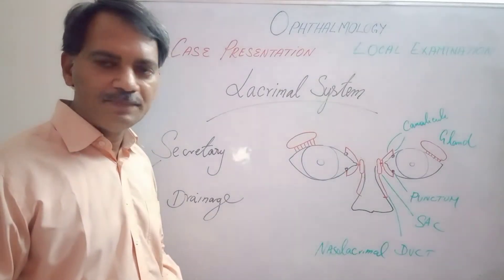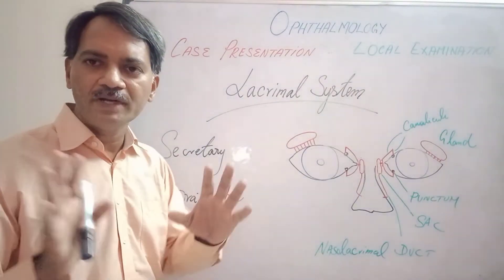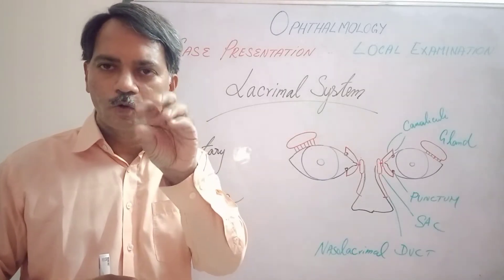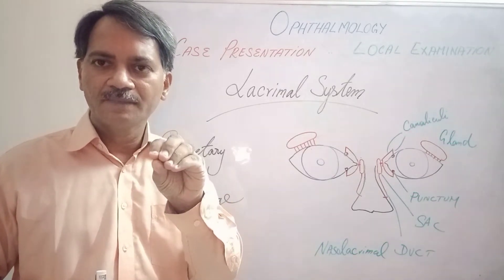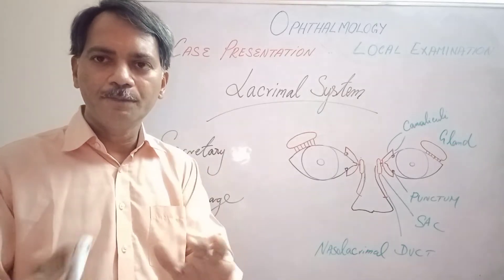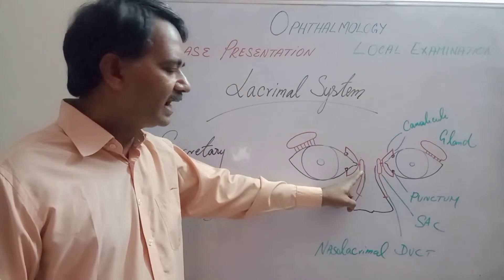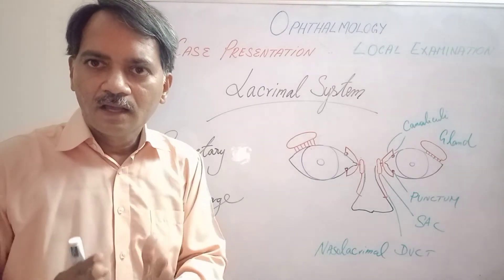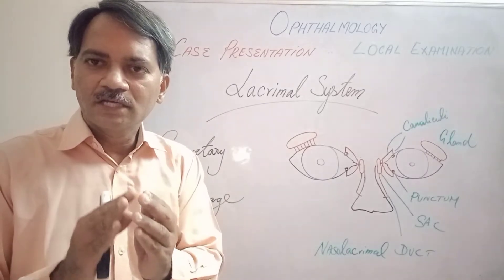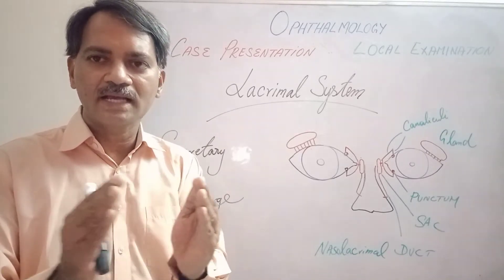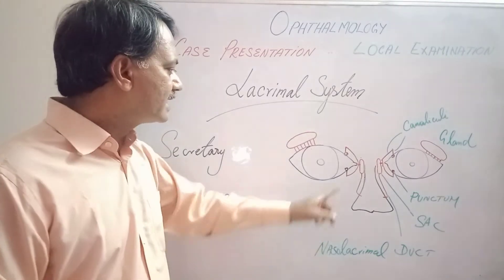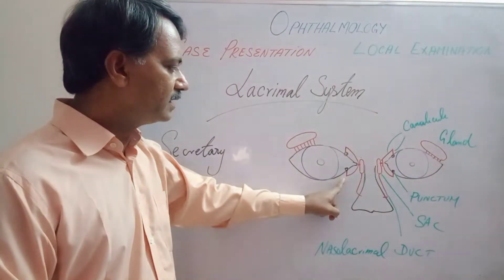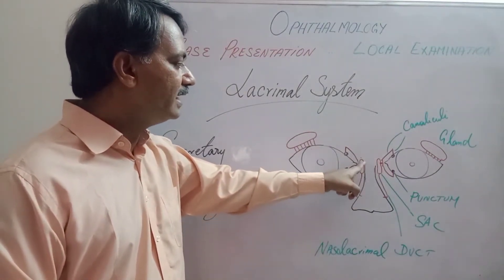Only the water component is pushed into the lacrimal drainage system. This is achieved by the orbicularis oculi muscle, which acts as a pump. When we close our eyes, it pressurizes the lacrimal sac. When we open our eyes, the pressure is relaxed and the sac expands, acting like an ink-filler sucking fluid from the conjunctival sac through the punctum, through the vertical canaliculus, through the horizontal canaliculus, and through the common canaliculus into the sac.